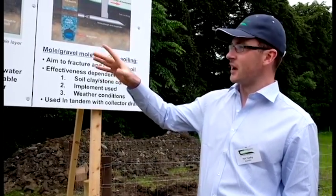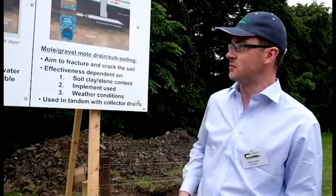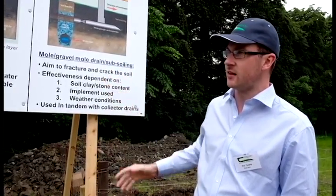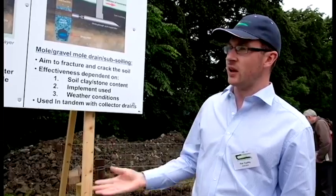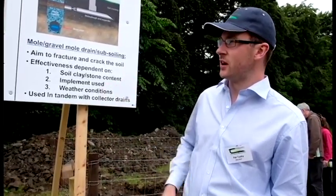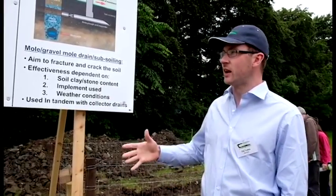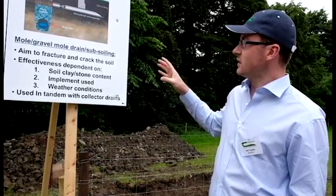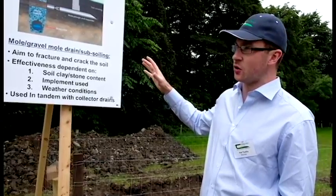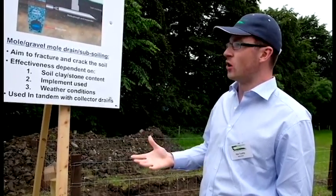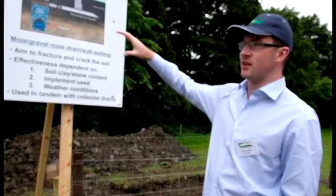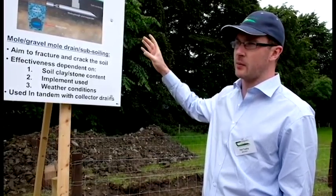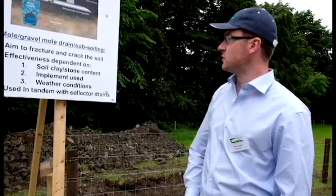Up on the board we have a run-through of the two main types of drainage system we come across in the country. The deeper groundwater system is put in to target groundwater at a particular depth — when you dig the pit and meet water at a particular depth, you install a drainage system to relieve that water moving naturally or rising through the soil. The shallower system involves putting in shallower pipe shores in heavier soil profiles and crossing those with either a mole plough or a gravel mole to create a pathway for water movement from the surface.